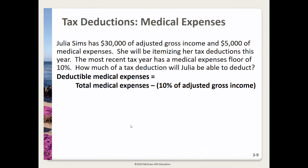In this next problem we're working with tax deductions for medical expenses. Julia Sims has $30,000 of adjusted gross income and $5,000 of medical expenses. With a medical expenses floor of 10%, we take total medical expenses minus 10% of AGI: $5,000 minus 10% of $30,000, which is $3,000, giving a deductible medical expense of $2,000. Note that if deductible medical expenses are equal to or less than 10% of AGI, there is no deduction.